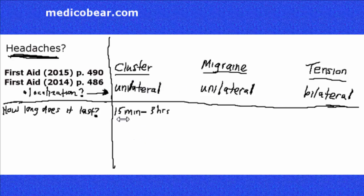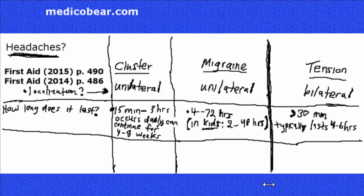Cluster headaches tend to last between 15 minutes to 3 hours. It typically occurs daily and it can continue between 4 to 8 weeks. Whereas the migraine headache typically lasts 4 to 72 hours. In kids, it's a little bit of a different story between 2 to 4 to 8 hours. And the tension headache typically can be between 4 to 6 hours and certainly over 30 minutes.